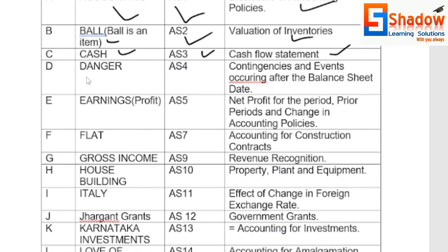D for Danger — AS4, Contingencies and Events occurring after the balance sheet date. E for Earnings — AS5, Net Profit for the Period, Prior Periods and Change in Accounting Policies.